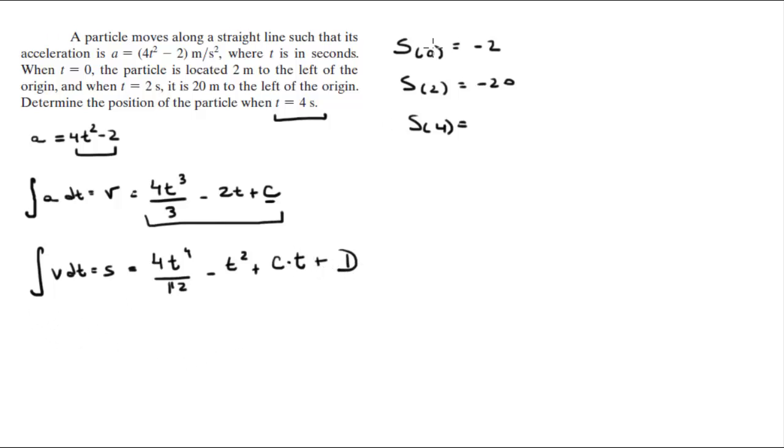So you know that when t is equal to 0, s is equal to negative 2, and this is the position. So negative 2 equals 4 times 0 to the 4 over 12, minus 0 squared, plus c times 0, plus d. So this becomes 0, this is 0, this is 0, so you know that d is equal to negative 2. So we already found d.